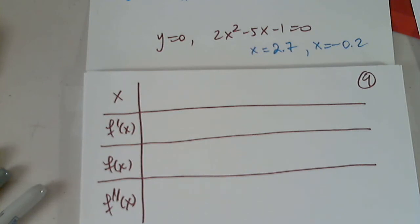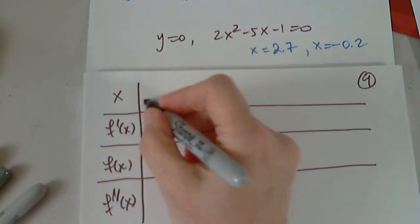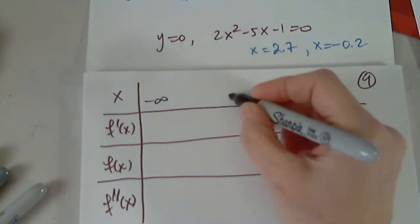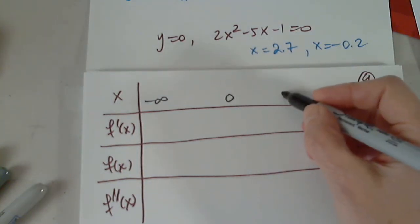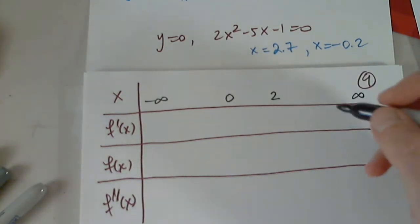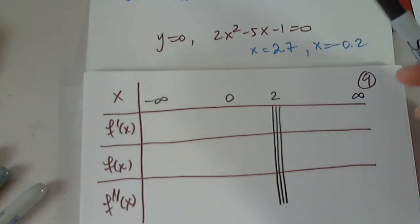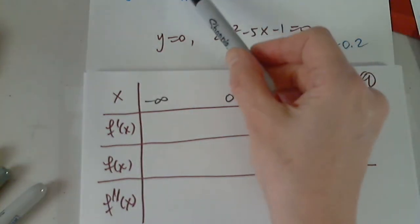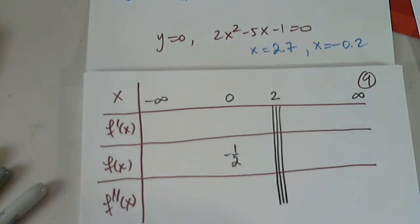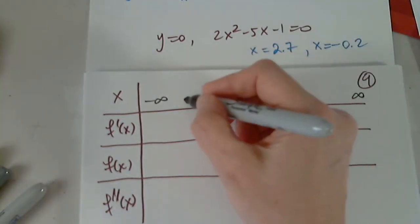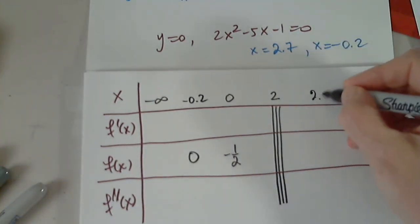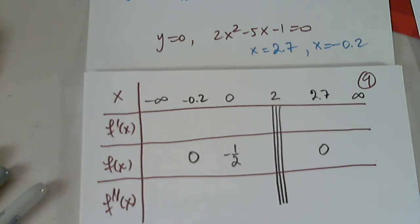Can anyone give us the domain of this function? Anything but 2. When I plug in 0, I get negative 1 half. When I plug in negative 0.2, I get 0. When I plug in 2.7, I also get 0. And that's it about the function from the function itself.